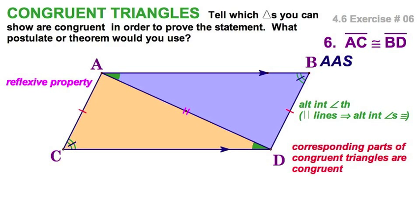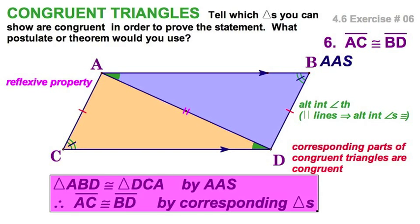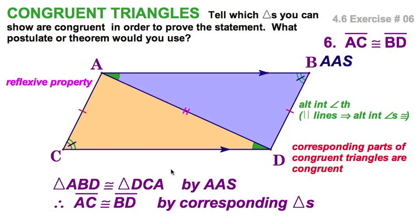Let's write it up the way your teacher wants. You're going to say that these two triangles are congruent — make sure you get the vertices in the right order — and the reason is angle-angle-side. And therefore each of their components, in this case AC and BD, are congruent.